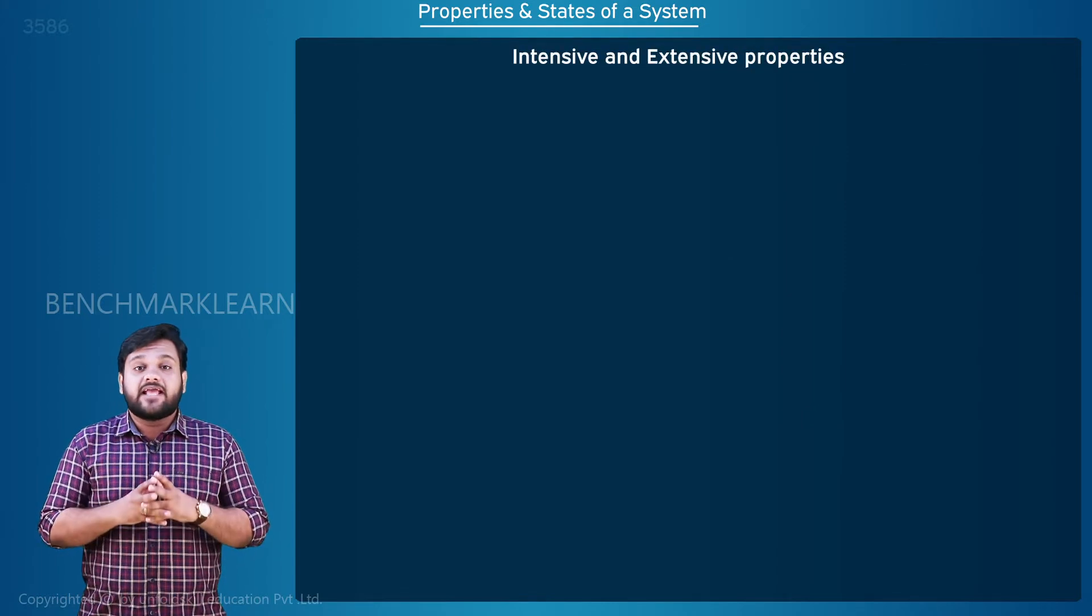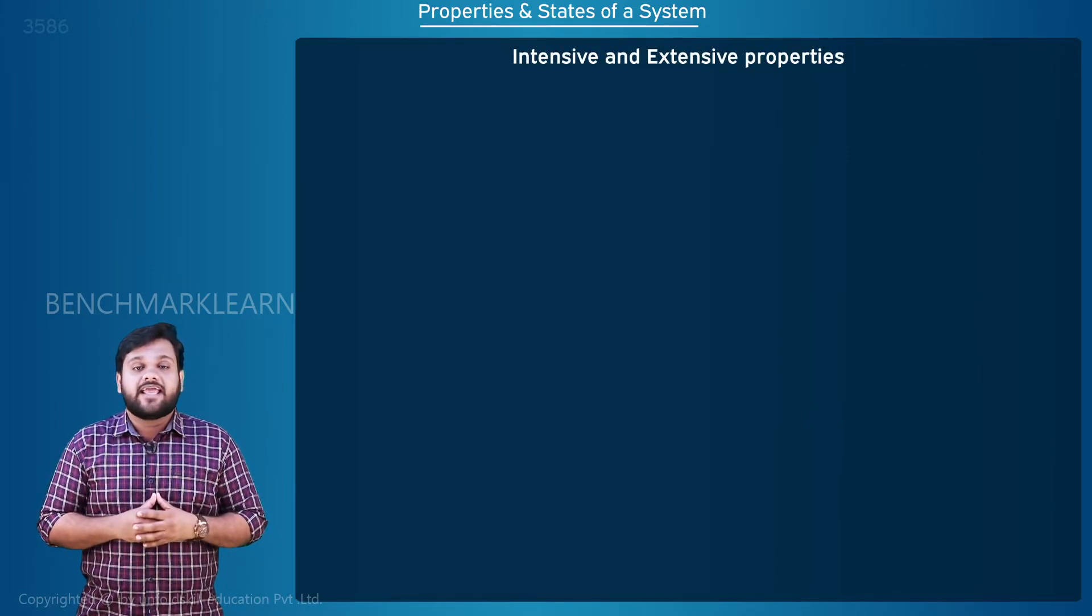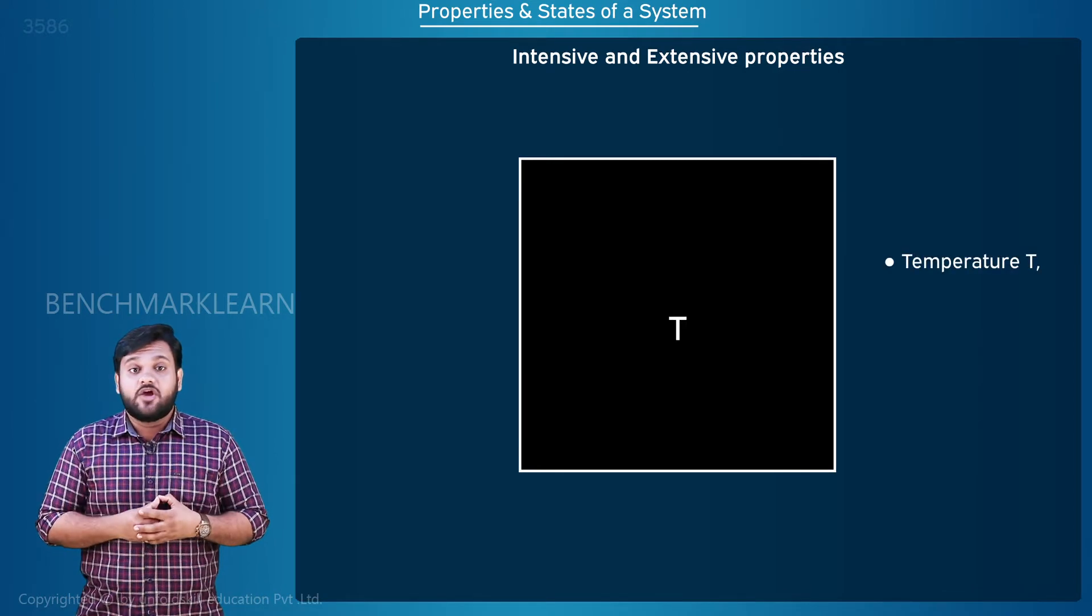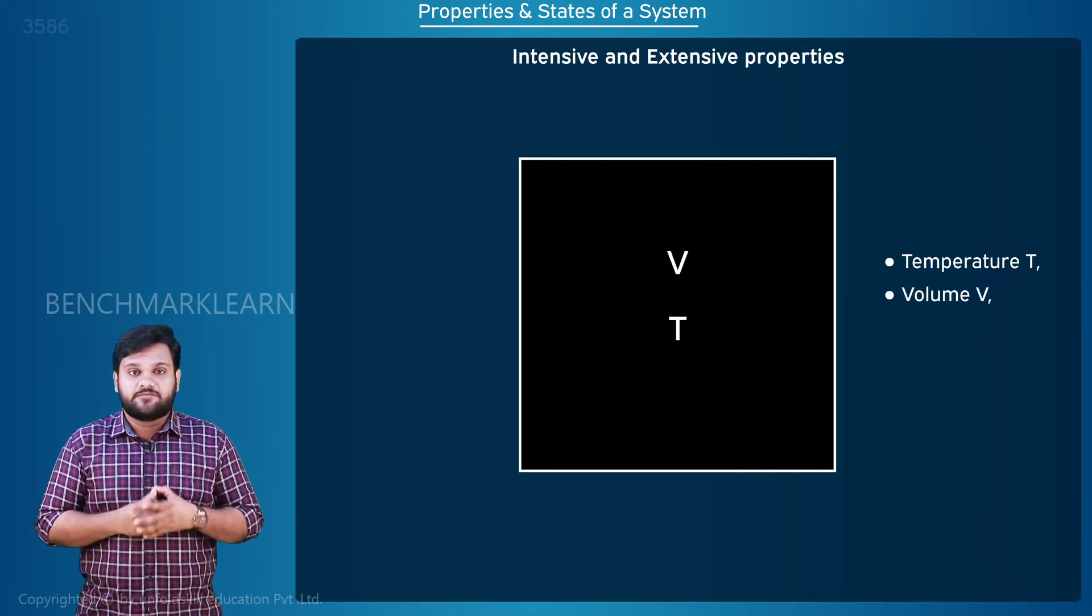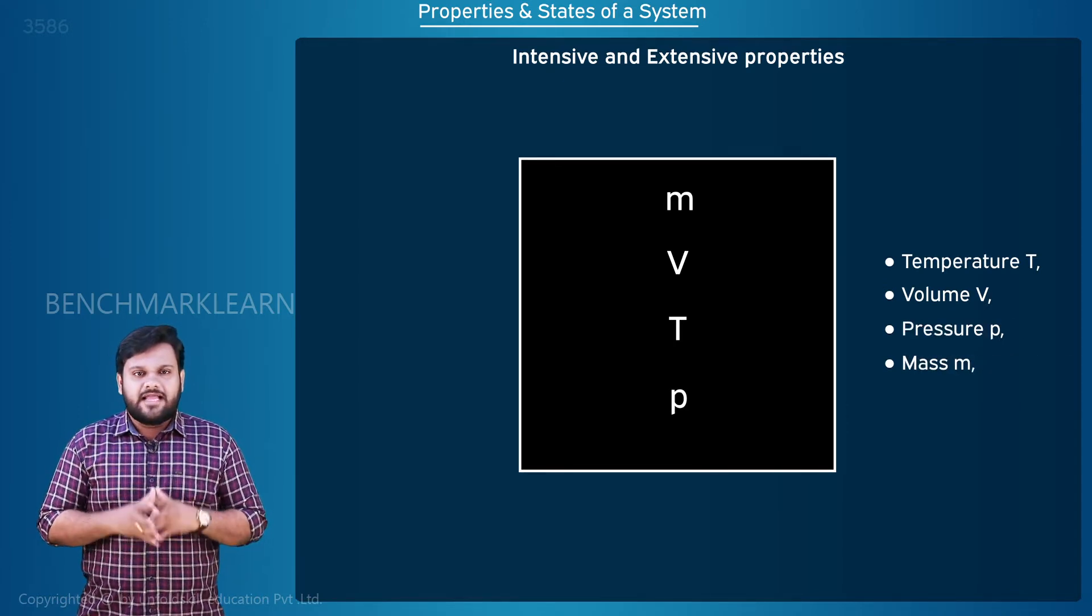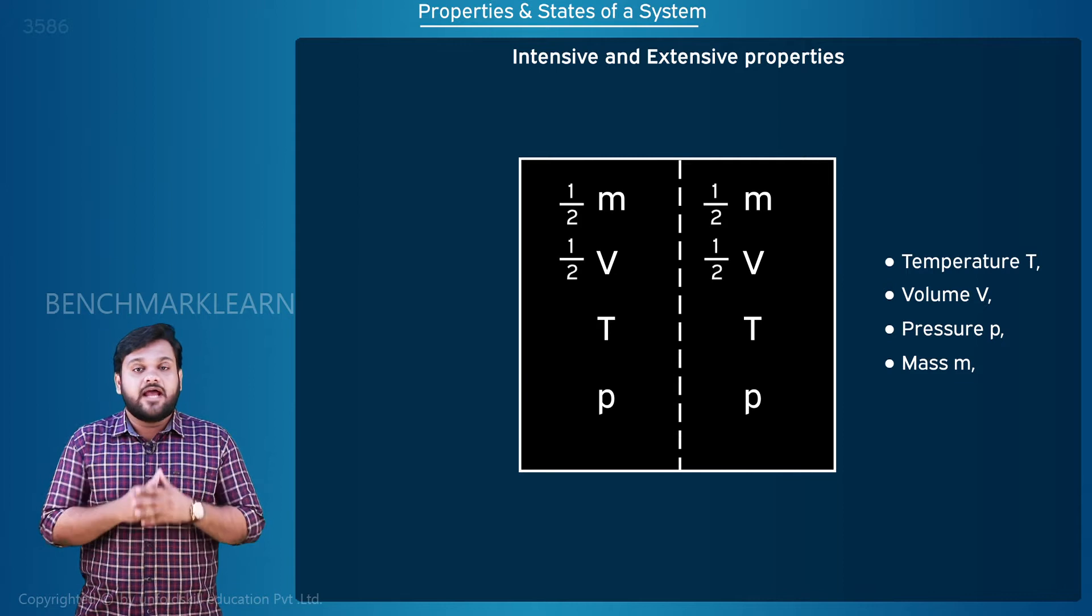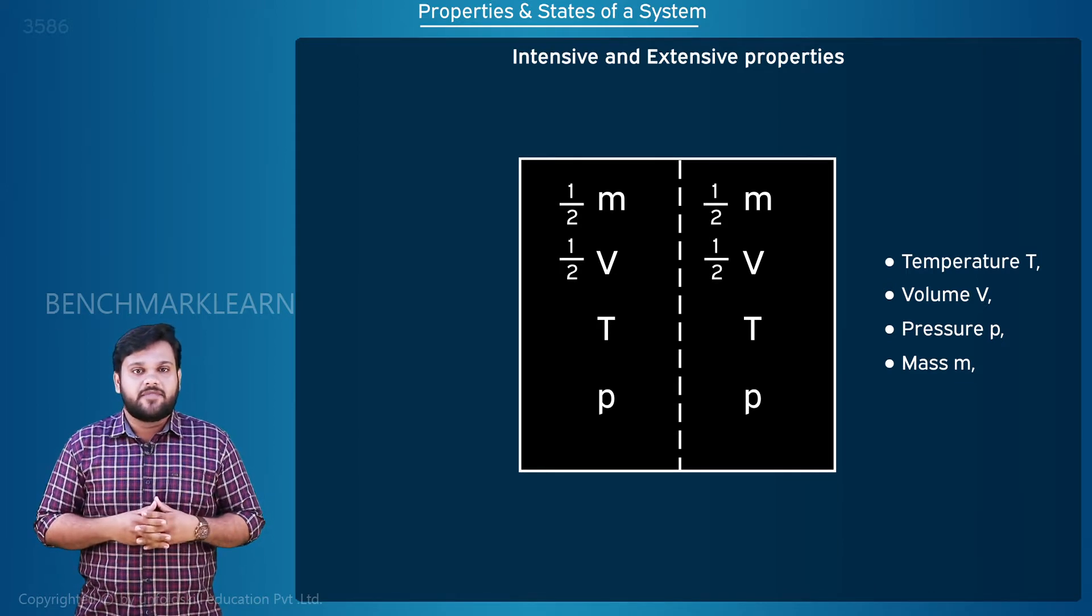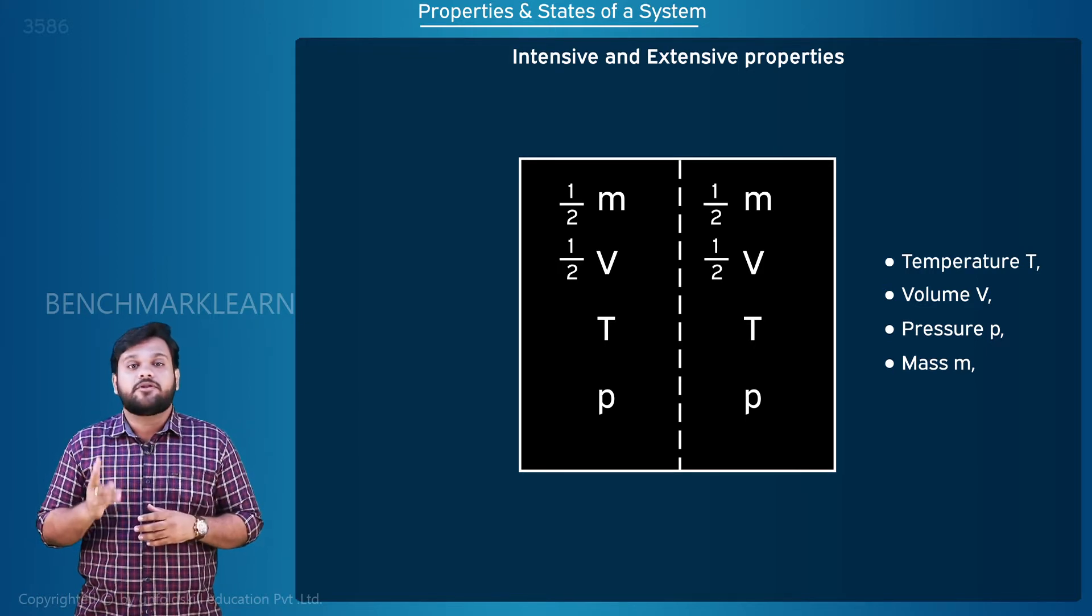Intensive and extensive properties. Consider a gas chamber with properties temperature T, volume V, pressure P, and mass m. Divide the gas chamber in half using an imaginary partition as shown here into compartment 1 and compartment 2.